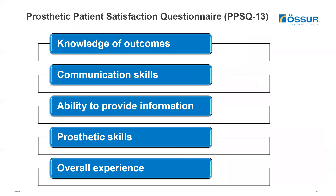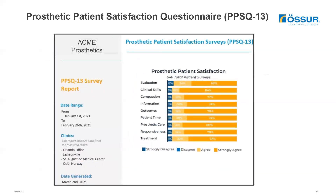One of the newest features of the pro-op is the Patient Prosthetic Satisfaction Questionnaire, or the PPSQ-13. It looks at five different areas: the prosthetist's knowledge of outcome measures, their ability to communicate outcome measure results to the patient, their ability to provide information to the patient, their ability to provide high-level skills with prosthetic fitting, and the overall experience of your patient while at your office. The PPSQ-13 also comes with a printout showing the aggregate of multiple patients seen within one month, one quarter, or on an annual basis.